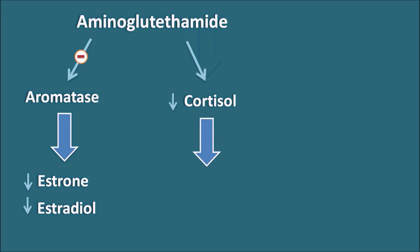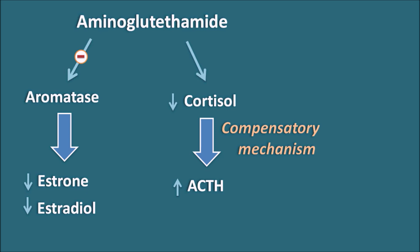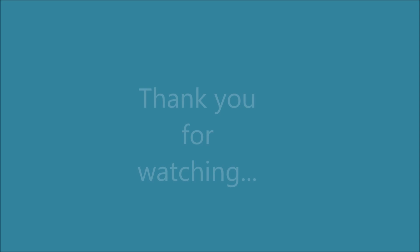As cortisol levels decrease, ACTH is released in a compensatory feedback mechanism. When aminoglutethimide is used, rising ACTH levels result in increased cortisol. Hydrocortisone is given externally to suppress the raised ACTH levels via negative feedback. Therefore, aminoglutethimide is co-administered with hydrocortisone to control the elevated ACTH.